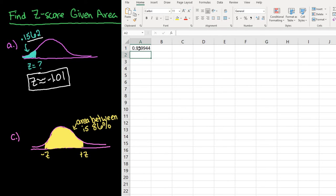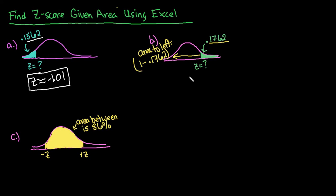And we would round this again to two decimal places. And we would get approximately 0.93. So our z-score would be 0.93.